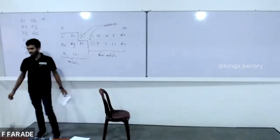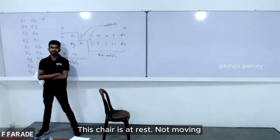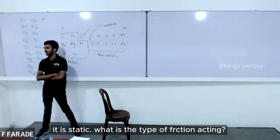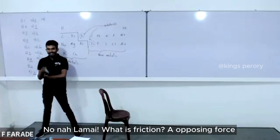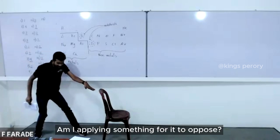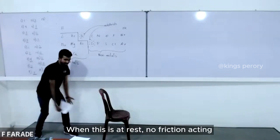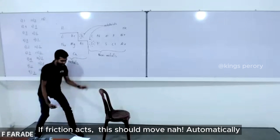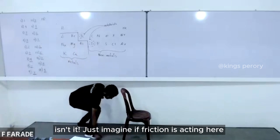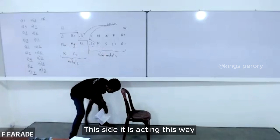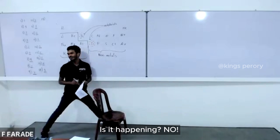This chair is at rest. What is the frictional force acting? It is static, not moving. Friction is an opposing force — am I applying something for it to oppose? No. So is there any friction acting when the object is at rest? No. If friction were acting, the object should move automatically — but that's not happening. So no friction acts on an object at rest with no applied force.